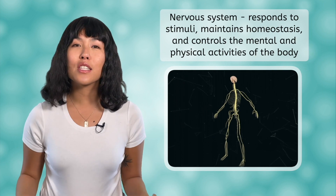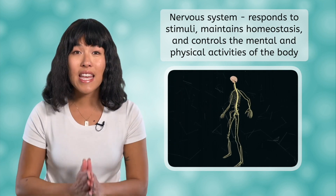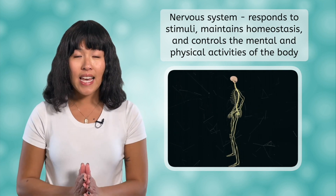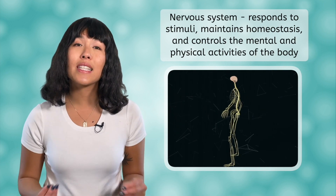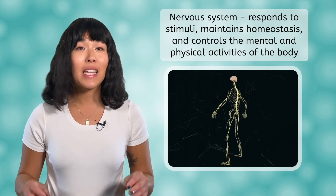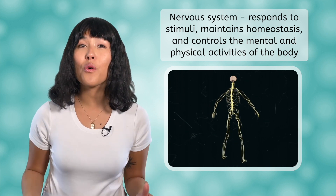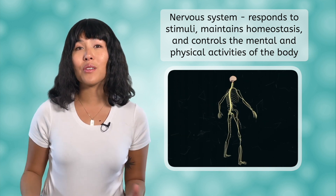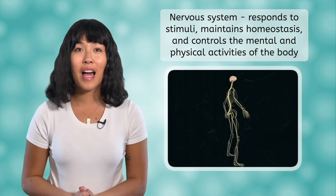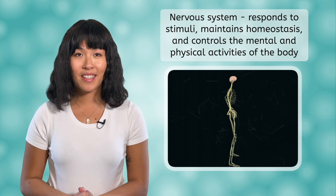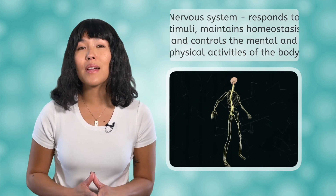The nervous system's role in the body is to respond to stimuli, maintain homeostasis in the body, and control the body's mental and physical activities. Neurons, or the cells that make up the nervous system, are specialized and have a unique structure.